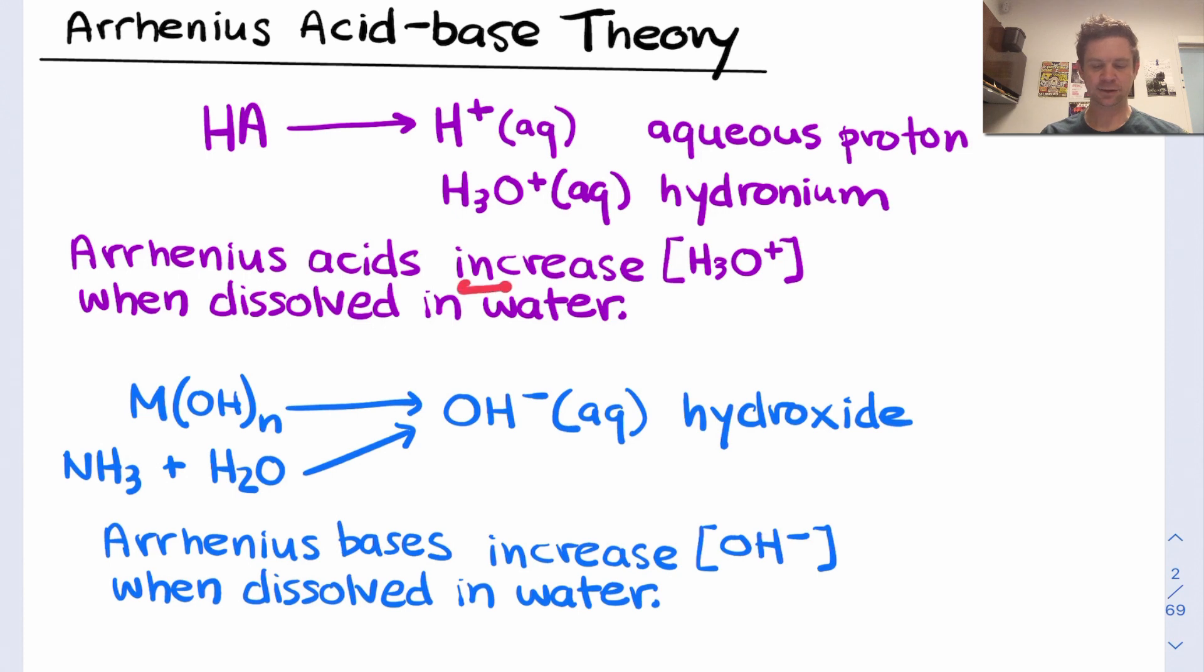To summarize, Arrhenius acids increase the concentration of dissolved hydronium ion or aqueous proton when they're dissolved in water, while Arrhenius bases increase the dissolved concentration of hydroxide when they're dissolved in water.